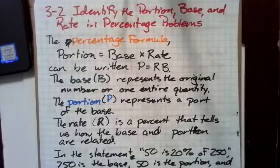The base (B) represents the original number or one entire quantity. The portion (P) represents a part of the base, and the rate (R) is a percent that tells us how the base and portion are related.